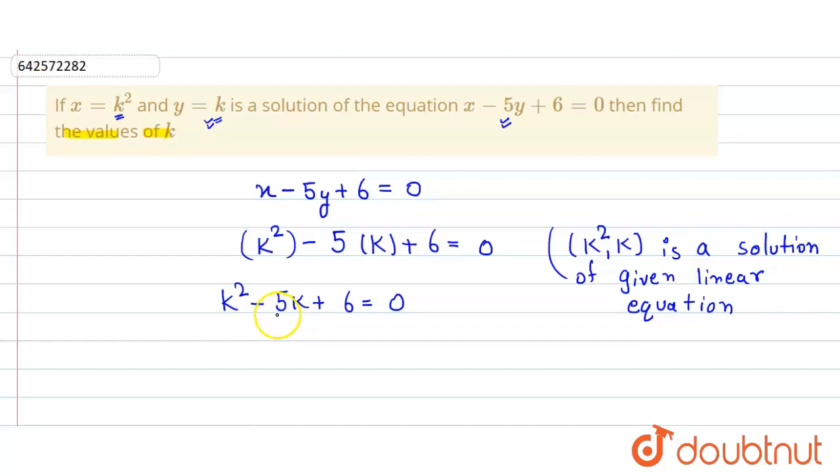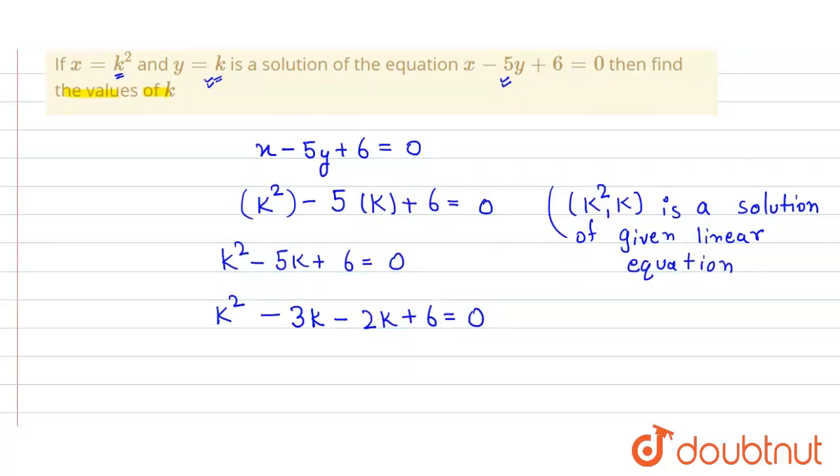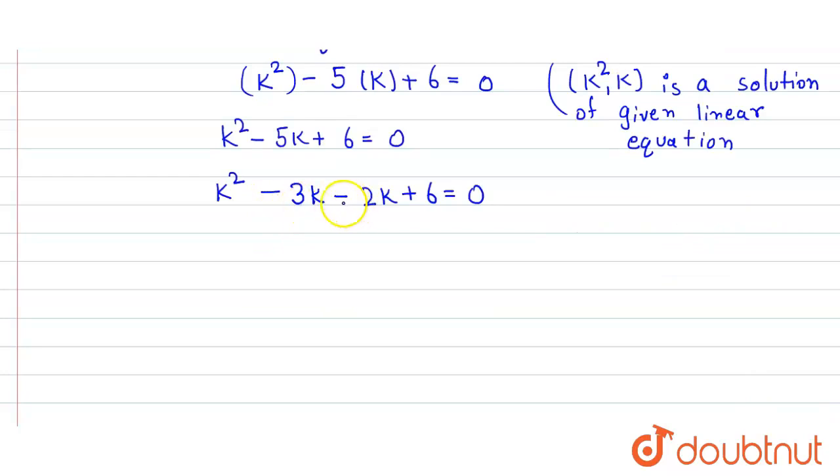So in order to solve this we split the middle term. So it is k² minus, this can also be written as minus 3k minus 2k and then plus 6 equals 0. So minus 3 minus 2 will equal minus 5, and minus 3 times minus 2 will equal 6.